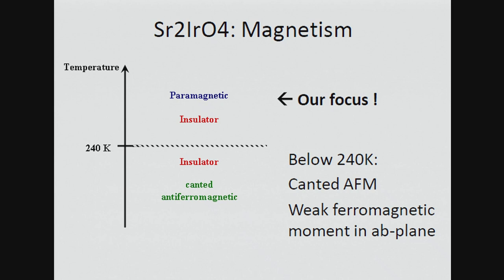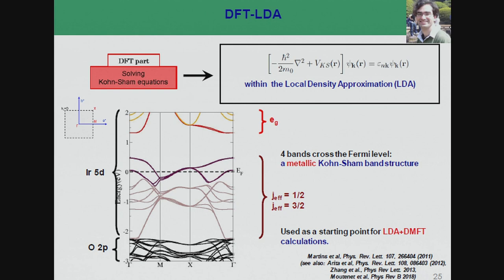Our focus will be on the paramagnetic phase at high temperature. We start from the experimental crystal structure and perform a DFT calculation. The result shows the T₂g states, with the reminiscent XY band of larger bandwidth, and oxygen states further down. The colors are a guide to the eye indicating a package of bands near the Fermi level. Note that there are four iridium atoms in the unit cell, and the dark-colored states would correspond to a single band per atom.